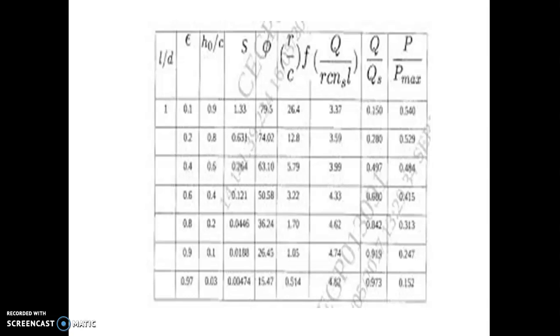Minimum fluid film thickness ratio H0 by C, Sommerfeld number, Attitude angle, coefficient of frictional variable (r/c)×f, flow variable q/(rcnsl), flow ratio q/qs, maximum film pressure ratio p/pmax.